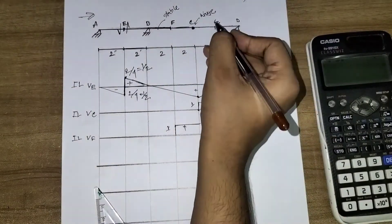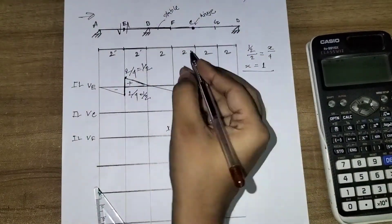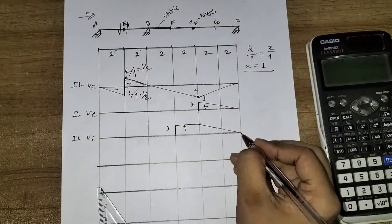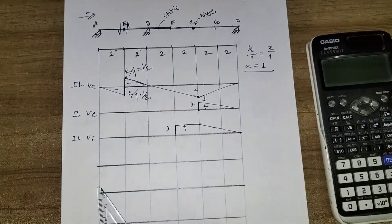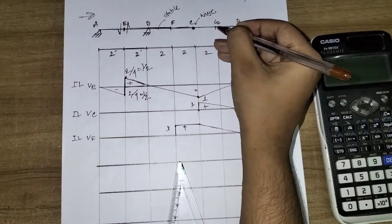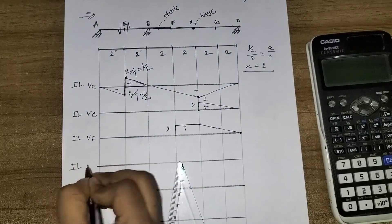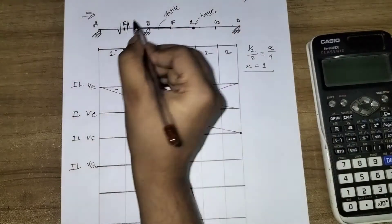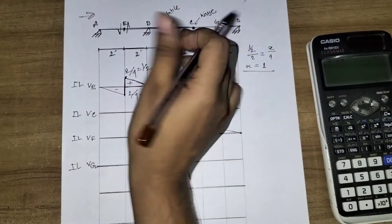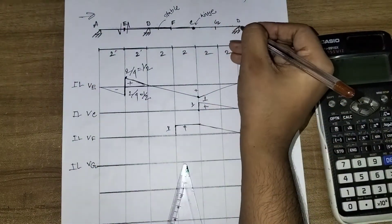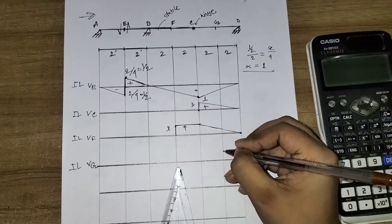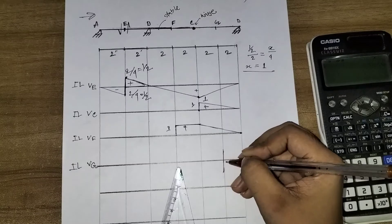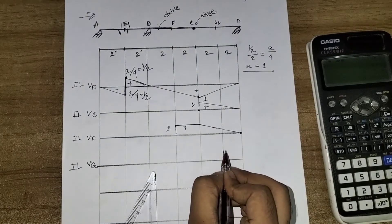Now I will draw point G, VG. E to C is stable, A to C is stable, and E point is stable. So G has a total 1 unit upward and downward area to record.